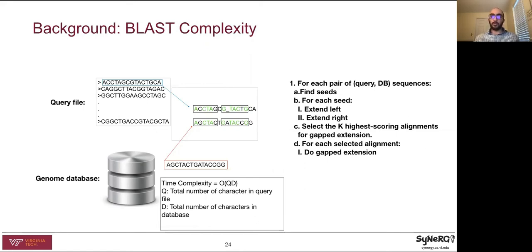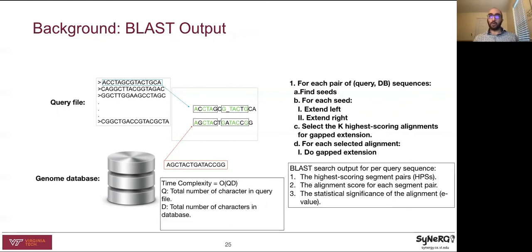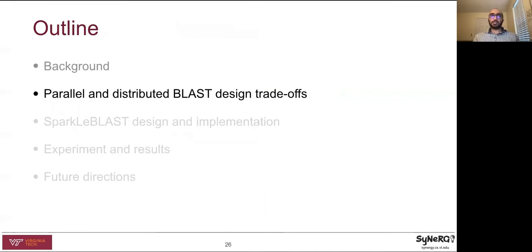Before proceeding further, let's take a look at the output of the BLAST algorithm. The output for every query sequence consists of the highest scoring segment pairs from the database, along with the alignment score and the statistical significance of the alignment. A highest scoring segment pair is a match between a query sequence and a database sequence. The output consists of a list containing all these segment pairs from the entire database, sorted by score and e-value.